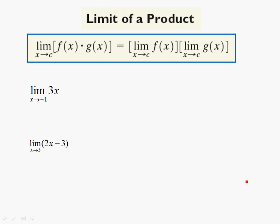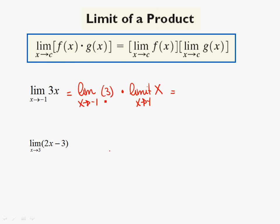What about a product? Well, it's basically the same thing. You just take the limit of the individual parts and you multiply. Can I make this limit into the limit of x going to negative one of three, and multiply that by the limit of x to negative one of x? You're allowed to do that. Three is still a constant, so this limit is worth three. And how much is this worth? So that's a negative three. That would fall under polynomial functions as well.